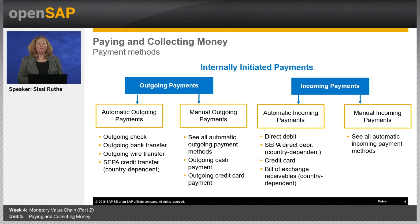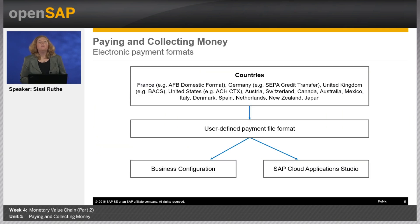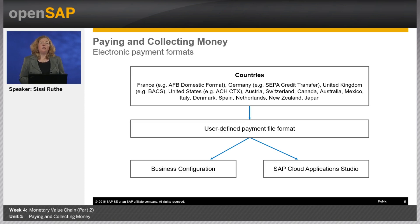I will show you later in the system demo automatic payments by bank transfer and incoming payments by direct debit. Most probably you provide your bank with electronic payment files so that the bank can process them. The system supports you in doing so, but you need to define a file format for this process. SAP Business by Design supports the most popular file formats of listed countries. For example, for France the file format AFB domestic, or for Germany the file format SEPA credit transfer is available.